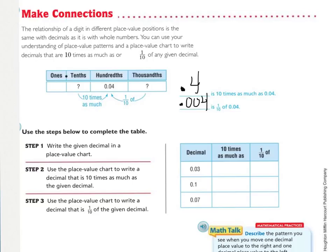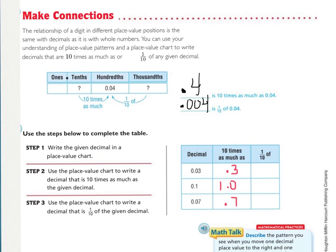Step one, write the given decimal in a place value chart. Right here we have three given decimals. This is three hundredths, one-tenths, and seven hundredths. Step two, use the place value chart to write a decimal that is ten times as much as the given decimal. Press pause and fill those in. You should have written that ten times as much of three hundredths is three tenths. Ten times as much of one-tenth is one whole. And ten times as much of seven hundredths is seven tenths. That's step two.